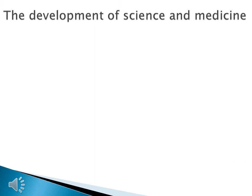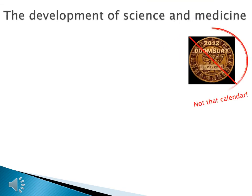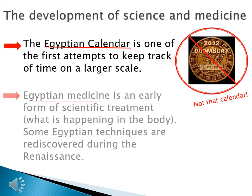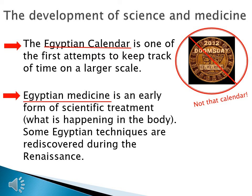Remember, Egypt was around for a very long time, and Egyptian civilization became so advanced that they developed things in areas like science and medicine, including the Egyptian calendar — one of the first attempts to keep track of time on a larger scale. Egyptian medicine is an early form of scientific treatment: treating somebody based on what we know about human beings rather than what the gods are telling us. This worked so well that some techniques were adopted in the Renaissance.